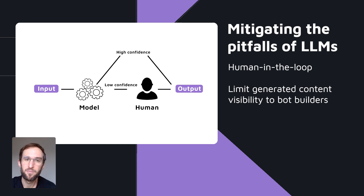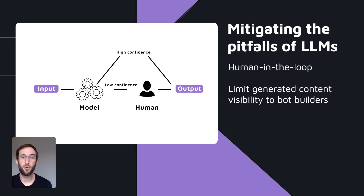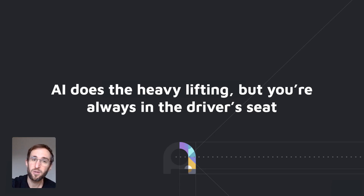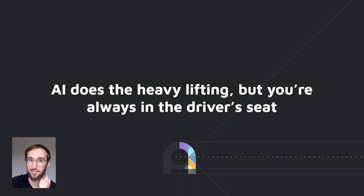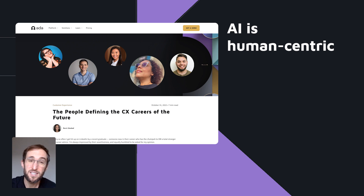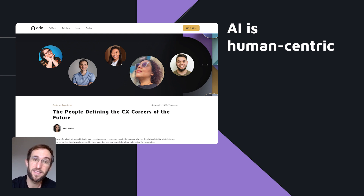Some of the principles we followed were having a human in the loop to create oversight for the AI suggestions. Since the model outputs were known to occasionally produce strange outputs, we made sure that the generated content was only visible to the people building the bot, not to end users. In general, we believe in giving brands control — so while your bot is doing the heavy lifting, you're always in the driver's seat. Our view on AI is human-centric: AI will bring new possibilities and ways of working, but ultimately it'll be humans that leverage it to its fullest potential. Through using our product, clients have transformed their support organizations, creating new roles and even new departments that evolve the way they interact with customers.